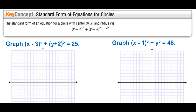Standard form of equations for circles: the standard form for a circle with center (h,k) and radius r is (x minus h) squared plus (y minus k) squared equals r squared. Let's graph this circle.